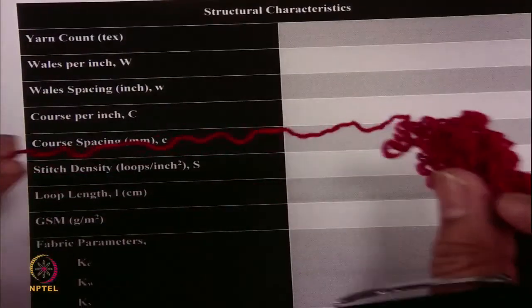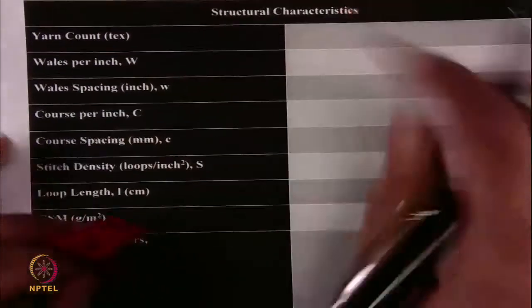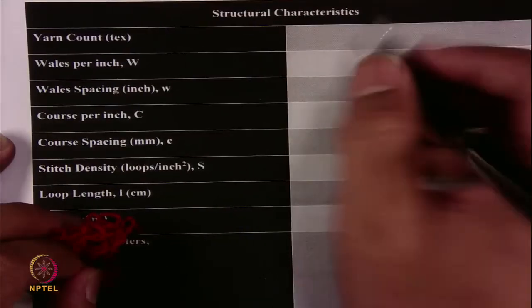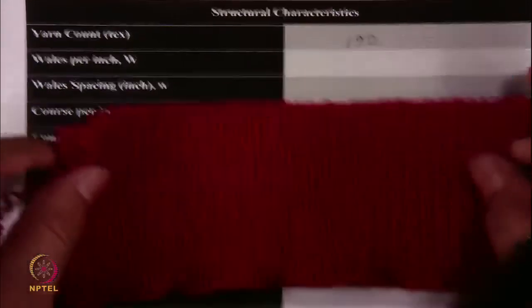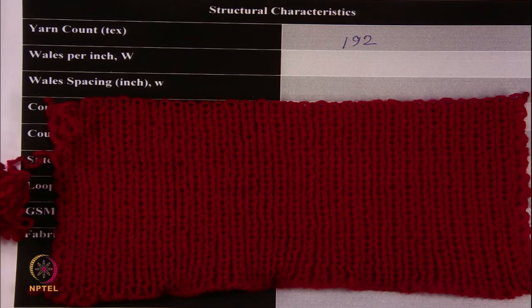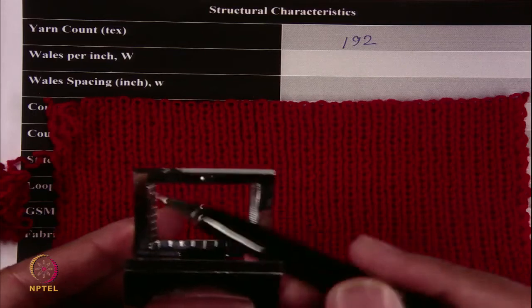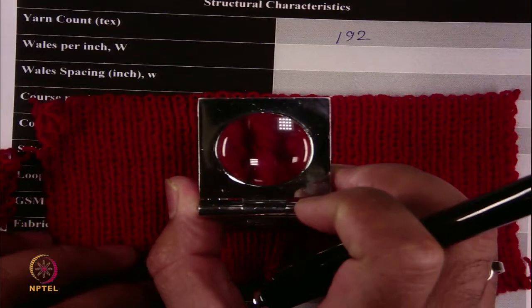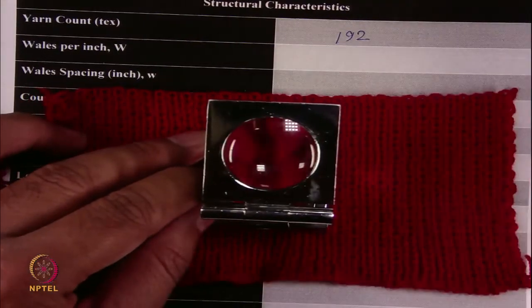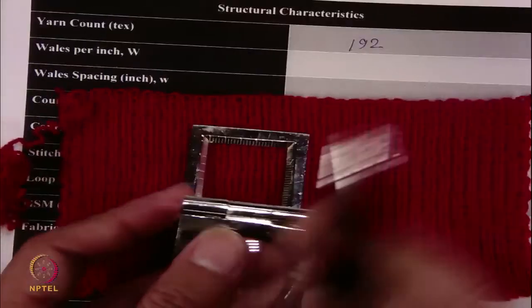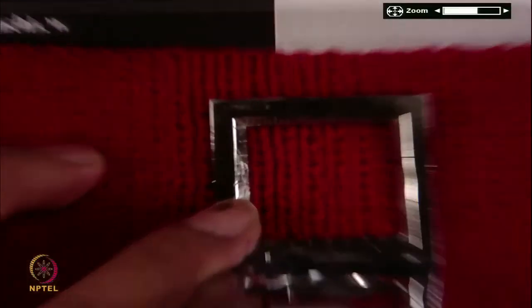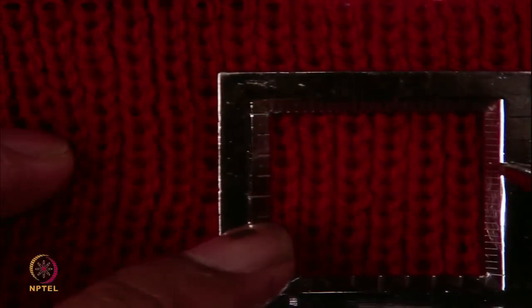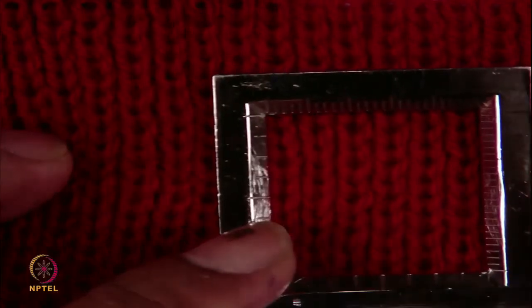Now come to the basic structural part. Yarn count: if you see this particular yarn, you can measure the distance and the weight. Yarn count in tex — tex is the weight of yarn per 1000 meters of length. The yarn count is 192 tex; I measured it in the lab. Wales per inch: to measure the wales per inch, you can put the fabric under the pick glass. In the pick glass, this is 1 inch. You can put it and count how many loops are visible in that particular length. Because this camera is highly zoomed, you can count very easily.